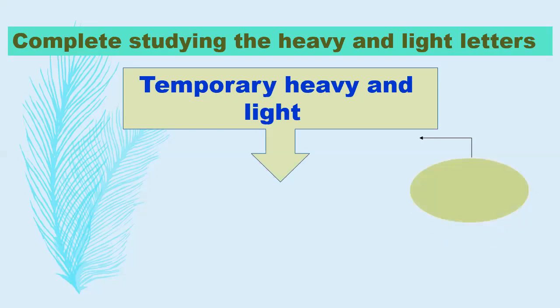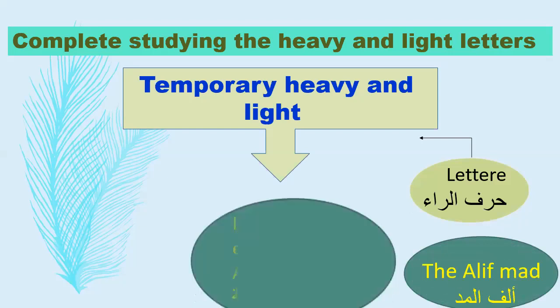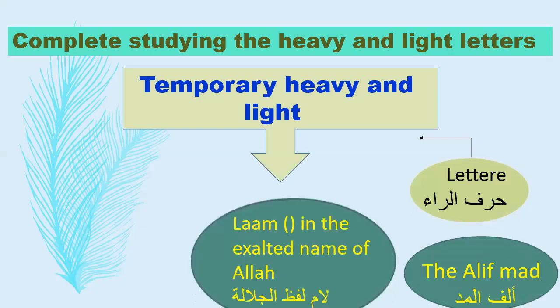There are four types of these letters. The first is Alif Mad. The second is Lam in the exalted name of Allah — Lam laf-dh al-Jalala.